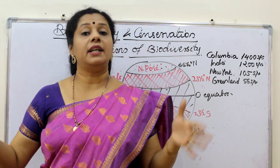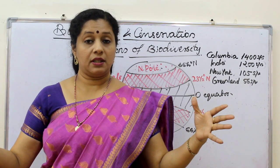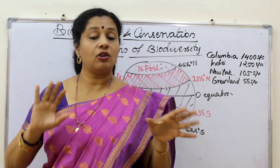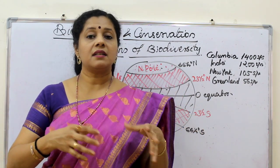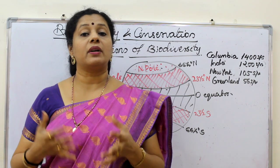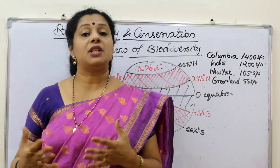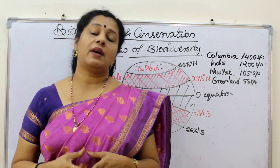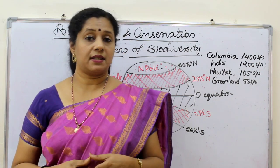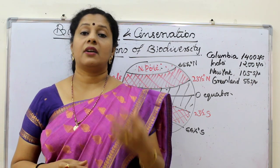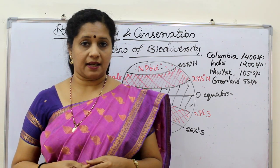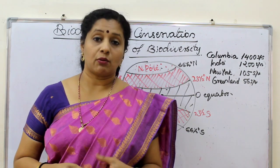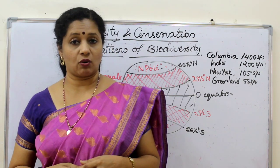Whereas in the tropical region, throughout the year — almost 12 months — the same conditions prevail, though summer and winter are there, they are not very extreme. As a result, life is continuous. So it gives more time for niche specialization, meaning habitation. Habitat is being specialized for each organism, which also adds to biodiversity increase. The third aspect is that rich sunlight and high light intensity promote productivity. When there is more productivity, there is more biomass, and when there is more biomass, more speciation can also happen.